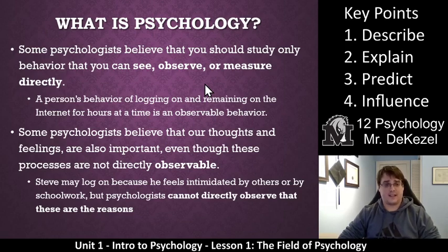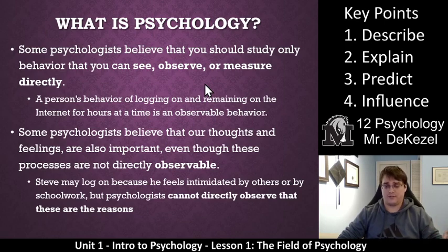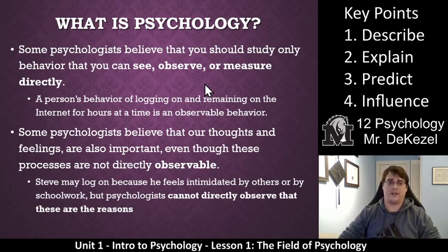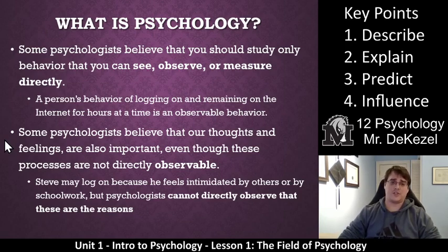Some psychologists believe that you should study only behavior that you can see, observe, or measure directly. An example would be measuring the behavior of a person logging on and off the internet for hours at a time — you can observe six hours here, and then eight hours in another block. Some psychologists believe that is the only information you should use: information you have measured. But other psychologists believe that our thoughts and feelings are also important.